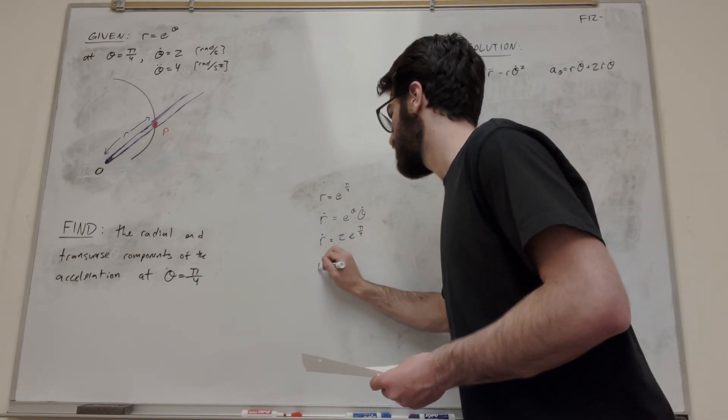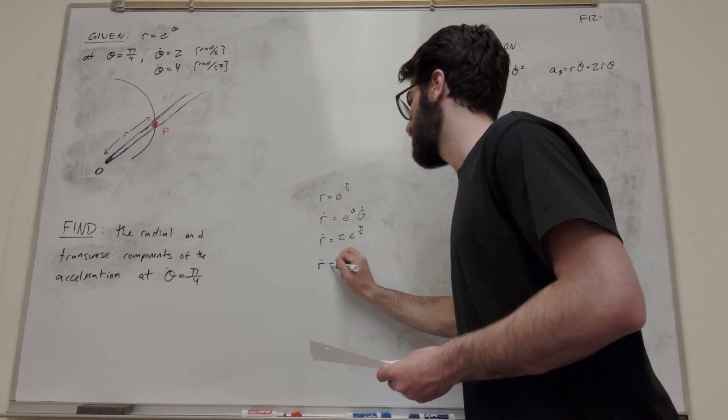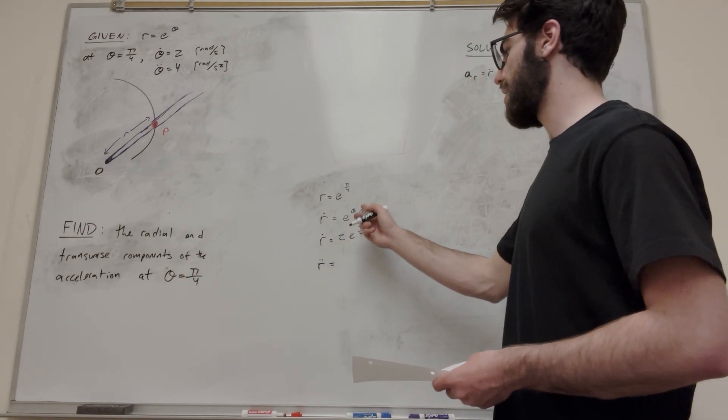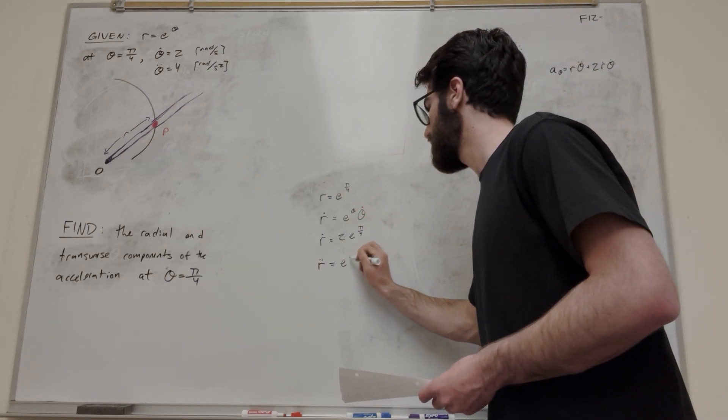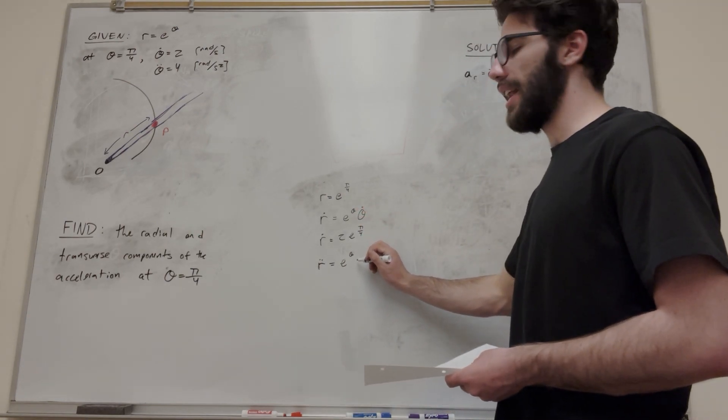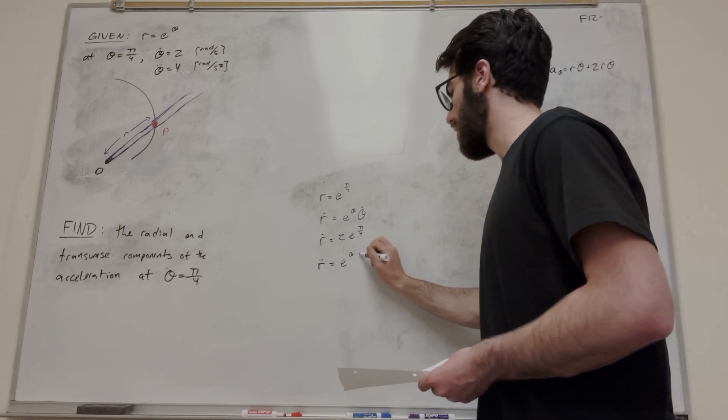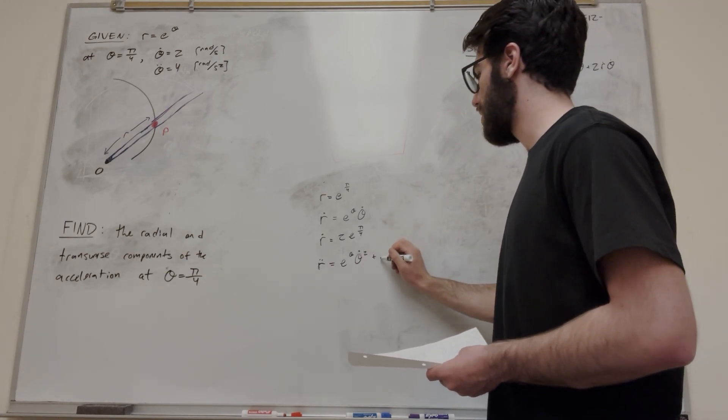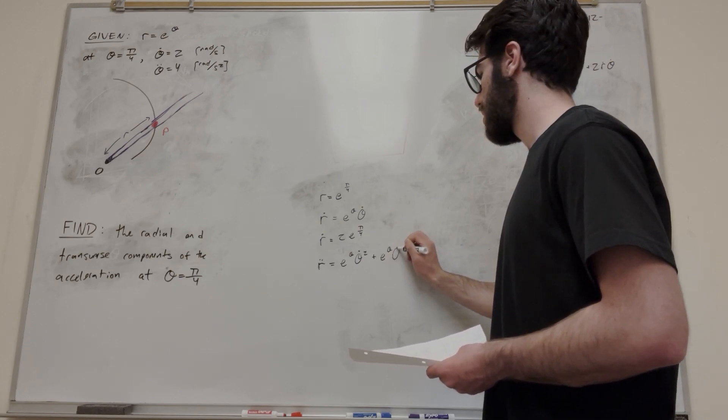So then let's take the second derivative, the second time derivative. So now we're going to need to use a product rule. So let's start with taking this first. It's going to be e to the theta, and then we're going to attach a theta dot. So it's going to make theta dot squared here. And then we're going to take the derivative of this, and that's going to be e to the theta theta double dot.